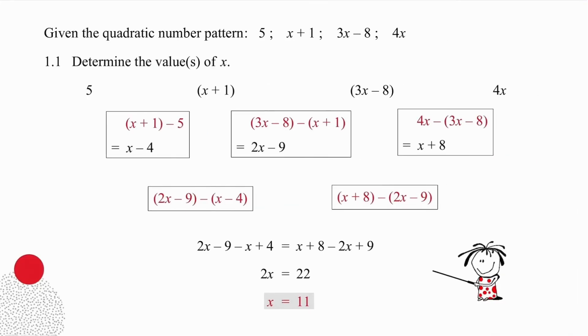Okay, so how did you do? Did you realize that you simply had to take the second term and subtract the first term, and if you did that carefully, you would have got x minus 4. Then you had to take the third term, subtract the second term, to get 2x minus 9. And finally, you had to take the fourth term, subtract the third term, to get x plus 8. So, three different first differences that are not equal.